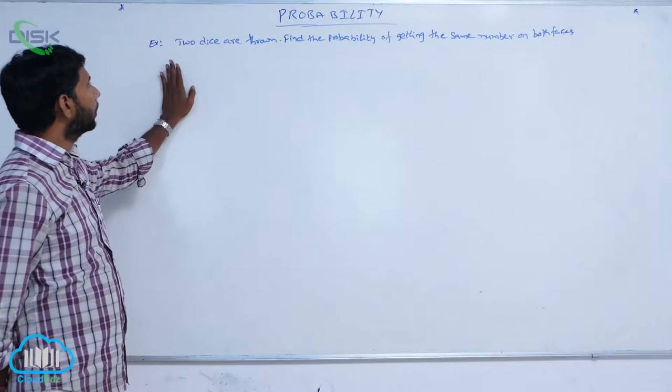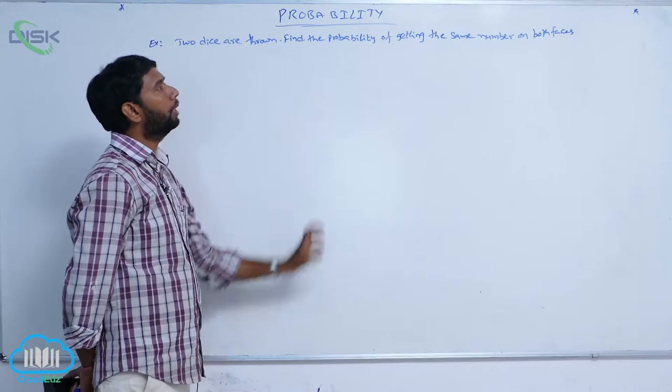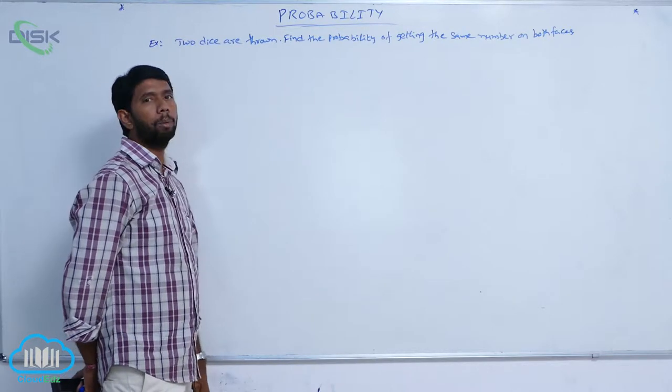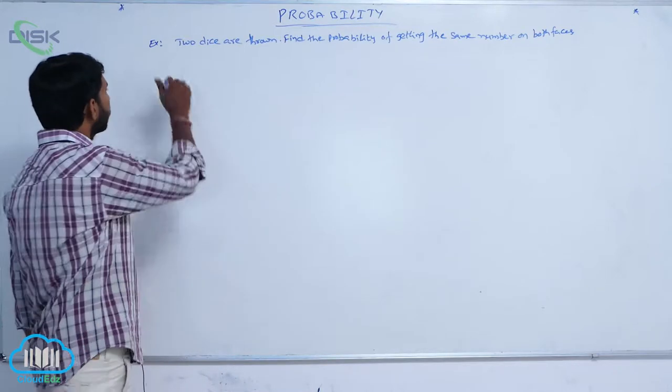Some examples about probability. Suppose two dice are thrown. Find the probability of getting the same number on both dice.